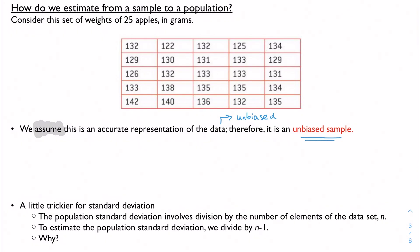One of the last things we need to talk about is how we go from sample to population. We spent a lot of time talking about how to get a good sample, how to make statistics from samples, but how do we actually use this to make a generalization? So here's our data set of 25 apples, their weights, and we're going to assume that this is an accurate representation of the data, so it's an unbiased sample.